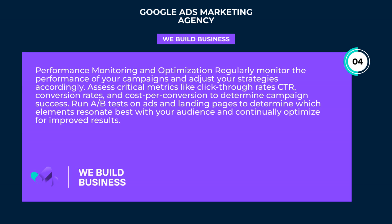Performance monitoring and optimization: Regularly monitor the performance of your campaigns and adjust your strategies accordingly. Assess critical metrics like click-through rates, conversion rates, and cost-per-conversion to determine campaign success. Run A/B tests on ads and landing pages to determine which elements resonate best with your audience and continually optimize for improved results.